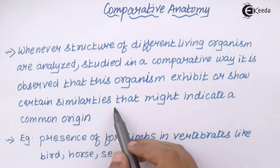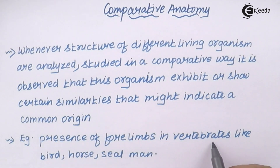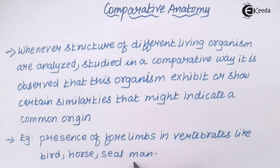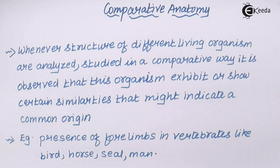For example, the presence of forelimbs in most of the vertebrates like birds, horses, seal, man, etc. Now, all the forelimbs in all these vertebrates have different functions, and they also look quite different in all of them.